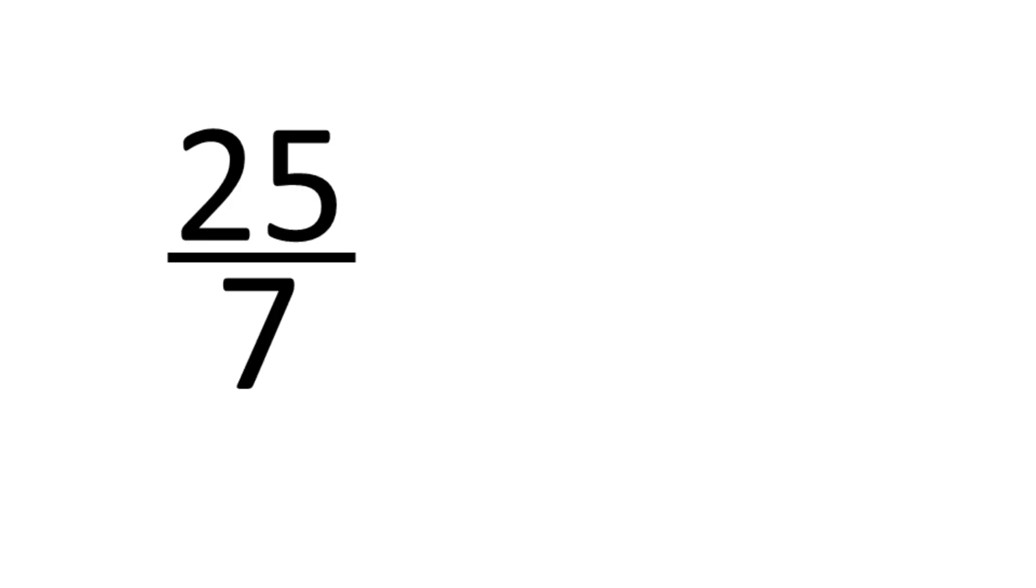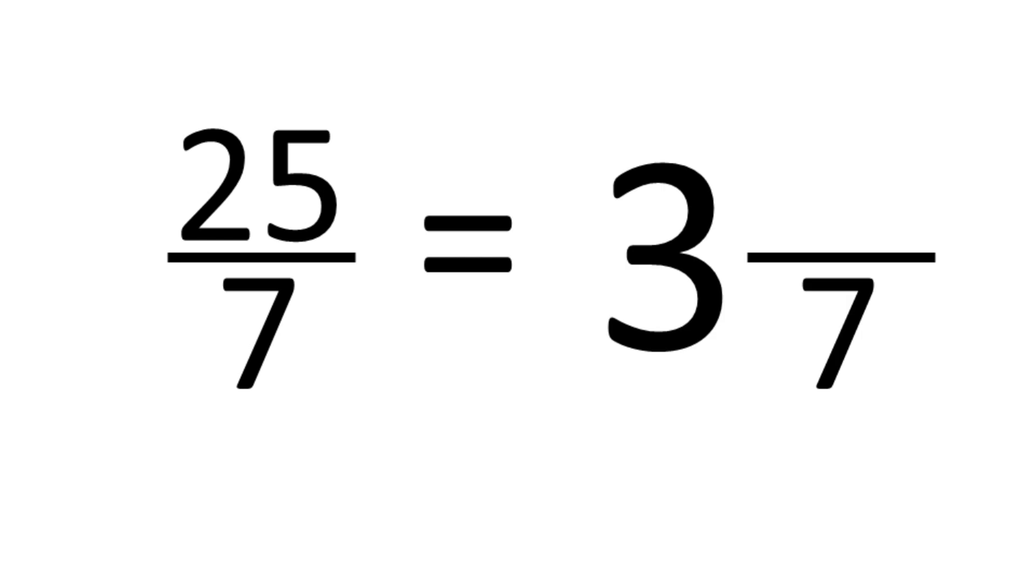Here's a slightly more complex example. Convert 25 over 7 to a mixed numeral. 3 times 7 is 21, so the answer is 3 with 4 left over. So the mixed numeral is 3 and 4 sevenths.